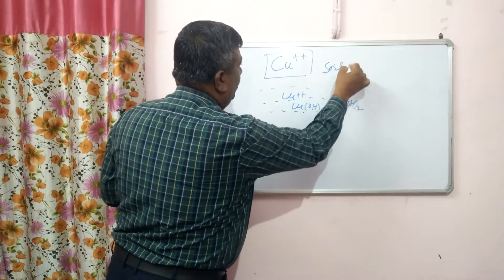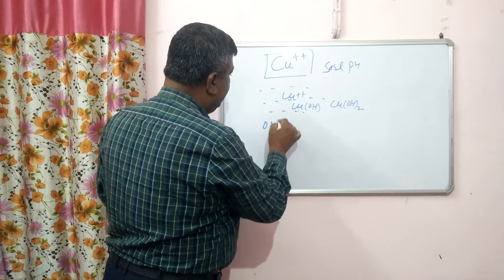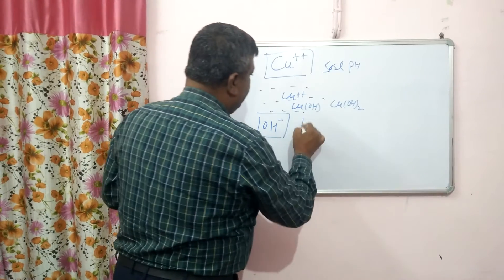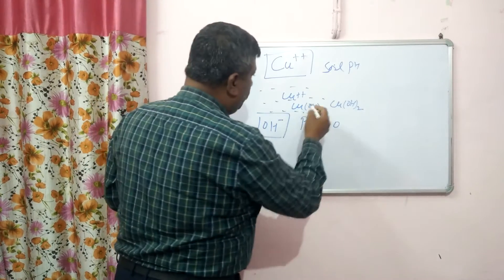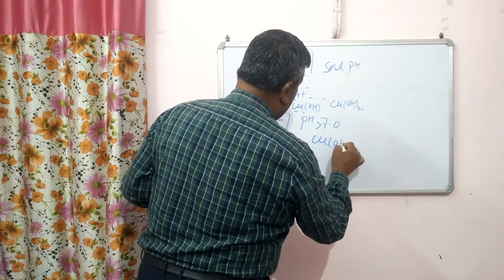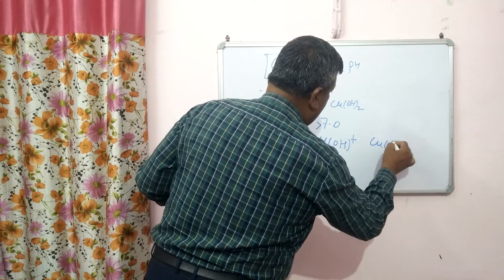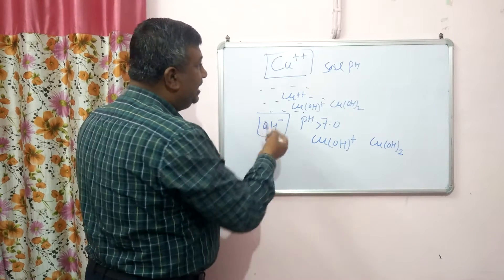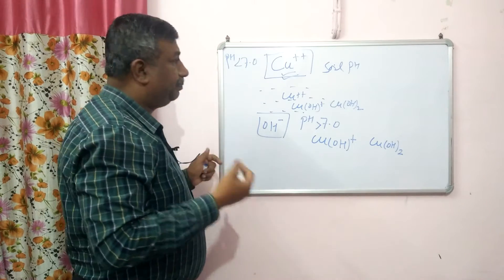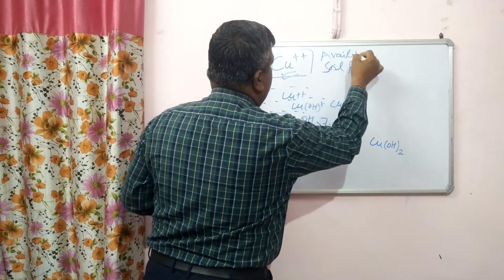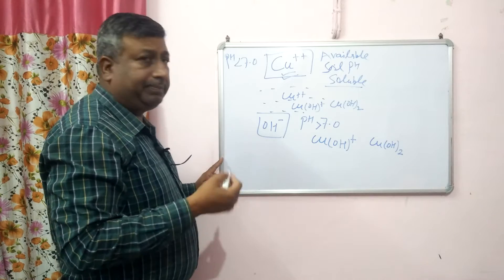Soil pH affects the Cu²⁺ form. As pH is increased above 7, hydroxyl ion concentration increases. Copper is then converted into CuOH⁺ ion, and if pH increases further, it is converted to Cu(OH)₂. When pH is less than 7, the Cu²⁺ form is present, which is the available form — it is soluble. This is the reason that copper is available under acidic pH conditions.